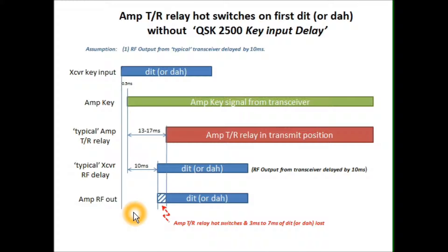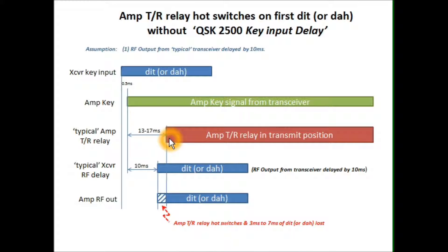In the meantime, your key input to the transceiver also initiates your RF, which typically comes about 10 milliseconds after the key input, and it generates either a dot or dash. The problem that occurs is because the RF coming out of the transceiver is coming out before the TR relay in the amplifier has settled. So what happens is the first part of your transceiver output is clipped by your amplifier, and also the TR relay hot-switches in this area, which is very hard on the contacts.